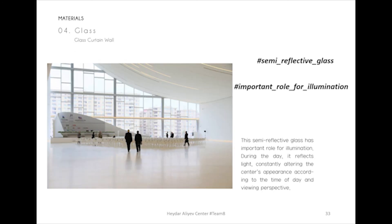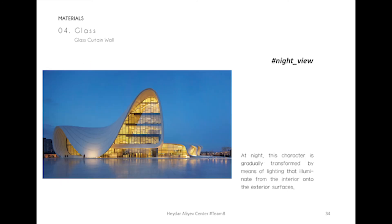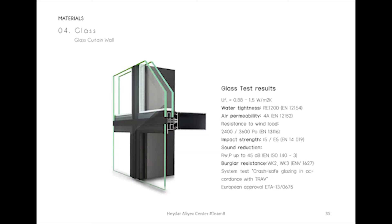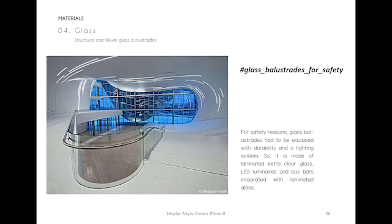The semi-reflective glass has an important role for illumination. During the day it reflects light, constantly altering the center's appearance according to the time of day and viewing perspective. At night, this character is gradually transformed by means of lighting that illuminates from the interior onto the exterior surfaces. For the strength of the glass, here are the results. For safety reasons, glass balustrades had to be equipped with durability and a lighting system, so they are made of laminated extra clear glass, LED luminaires, and bus bars integrated with laminated glass.